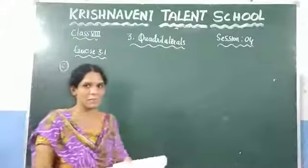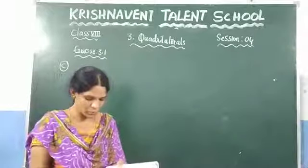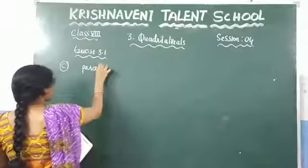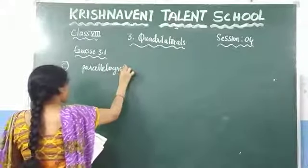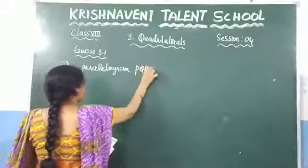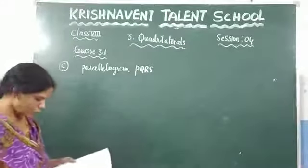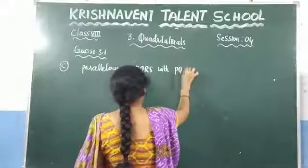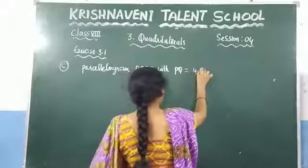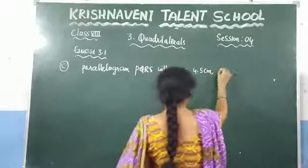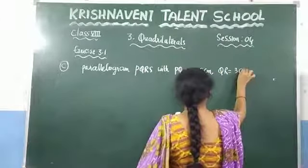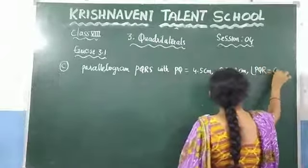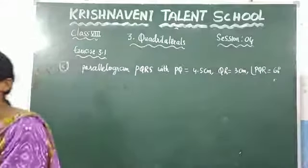You need to draw the parallelogram with the given measurements. Which parallelogram? You need to draw parallelogram PQRS. The length of PQ is given as 4.5 cm, the length of QR is 3 cm, and the angle PQR is equal to 60 degrees.